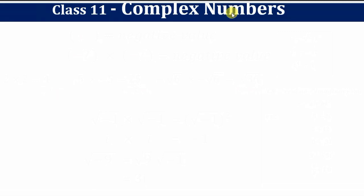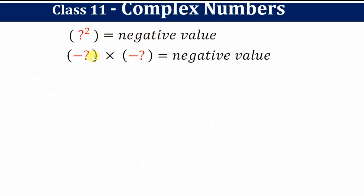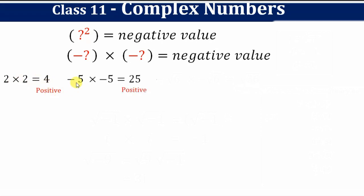Can you think of a number which, when squared, gives a negative value? A number which when multiplied to itself gives a negative value. Let us try a few options: 2 × 2 = 4, which is positive. Negative 5 × negative 5 = 25, which is again positive.